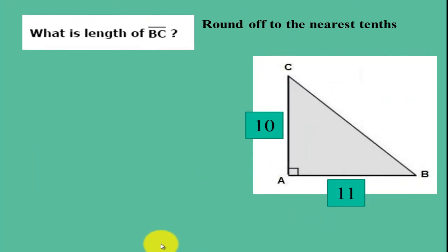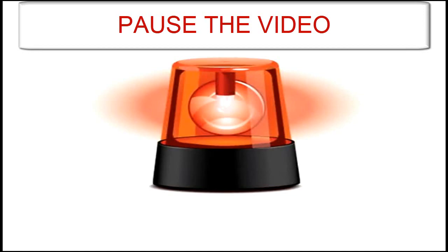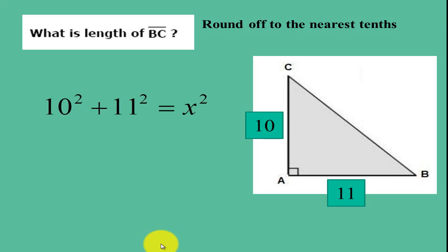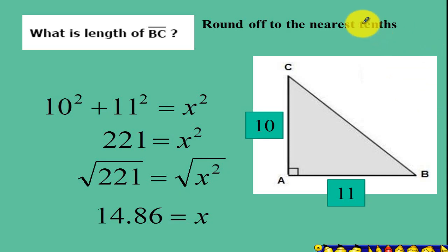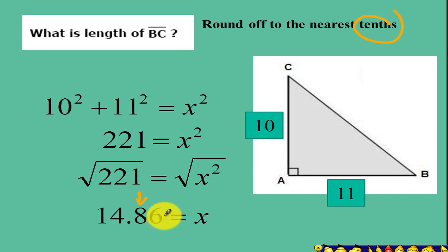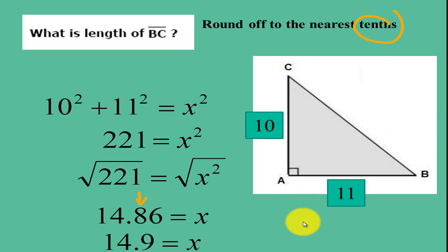Alright, next example. Again, pause the video, solve this question, and make sure that you round off your answer to the nearest tenths. So here should be your solution. Sum the square of the legs: 10 squared plus 11 squared, you should be able to get 221. Take the square root and you should be able to get 14.86. Now it says we need to round off to the nearest tenths. So this is your tenths place. Since the number to the right of 8 is more than 4, we have to add 1 to your 8. So your hypotenuse or length BC should be equal to 14.9.